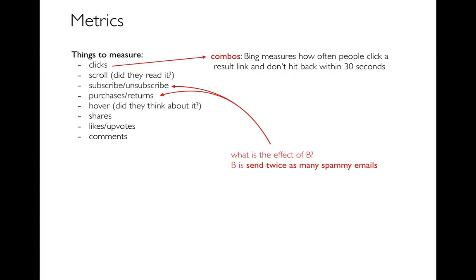Here are a couple use cases about how different actions might affect multiple metrics. Online companies often send emails. Let's say in the B population everybody gets twice as many emails — spammy emails like 'here's a promotion, buy our product.' My intuition is that if we send more spammy emails, we're going to sell more in the short run, but we're also going to get more people unsubscribing, which hurts things in the long run. If we're foolishly only looking at one metric like short-term purchases, we're going to miss factors like that.